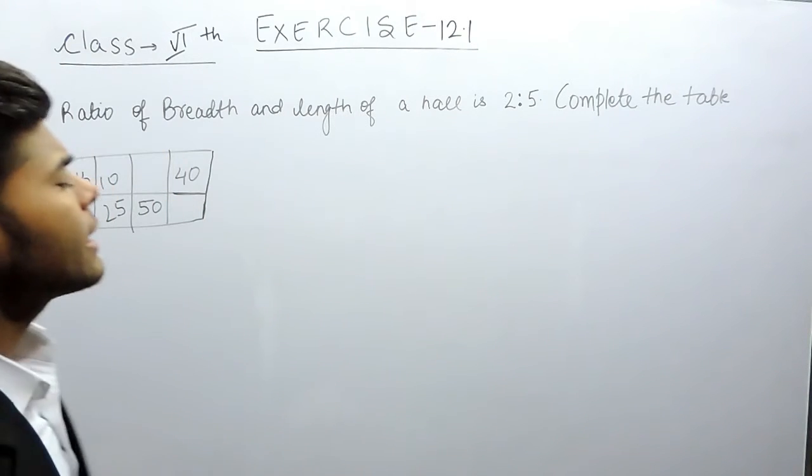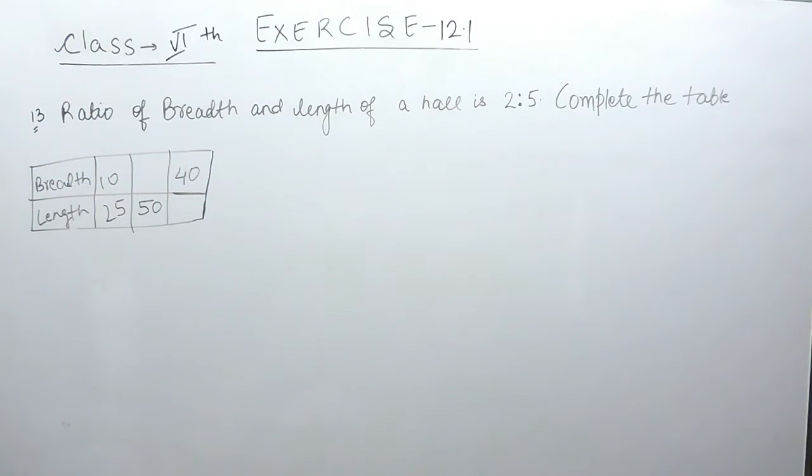Hello everyone. This is the 13th question of exercise 12.1, and we are given that the ratio of breadth and length of a hall is 2 to 5. So we have to complete this table.